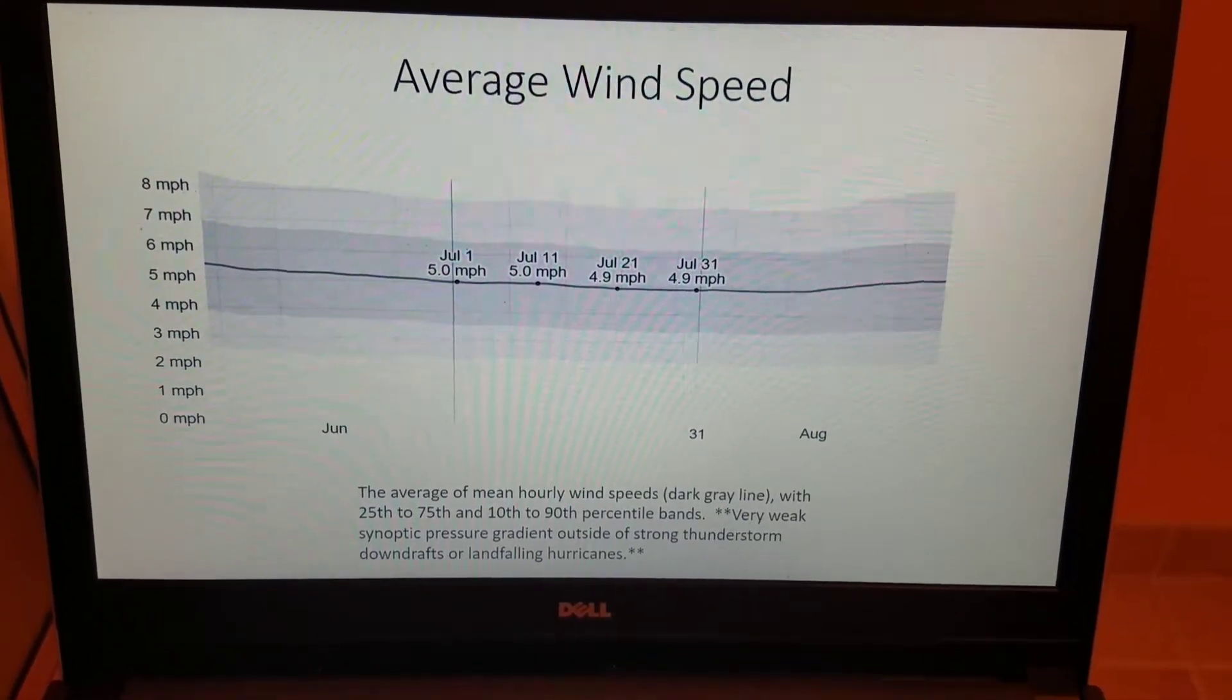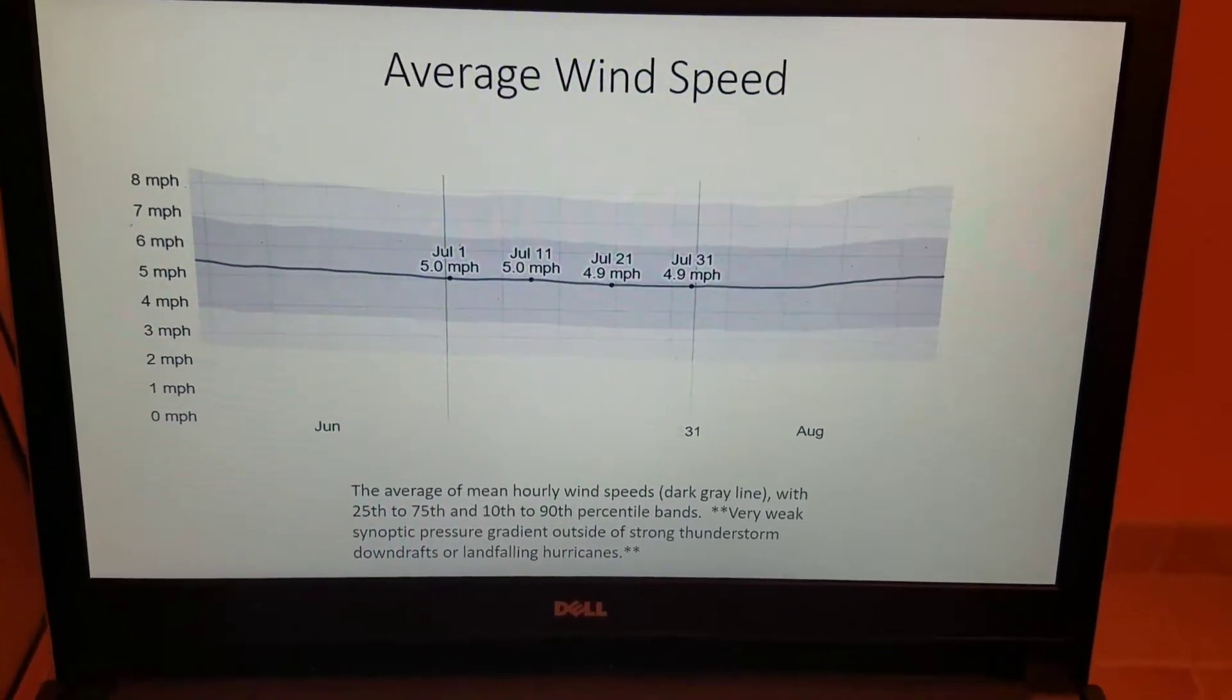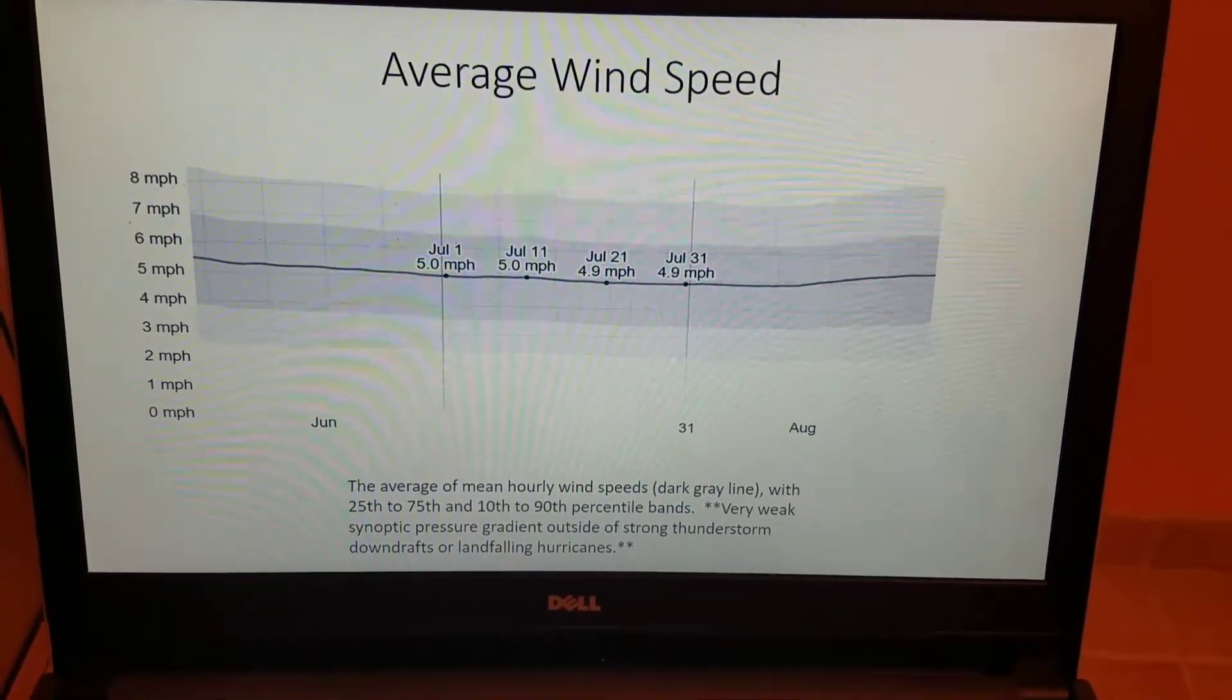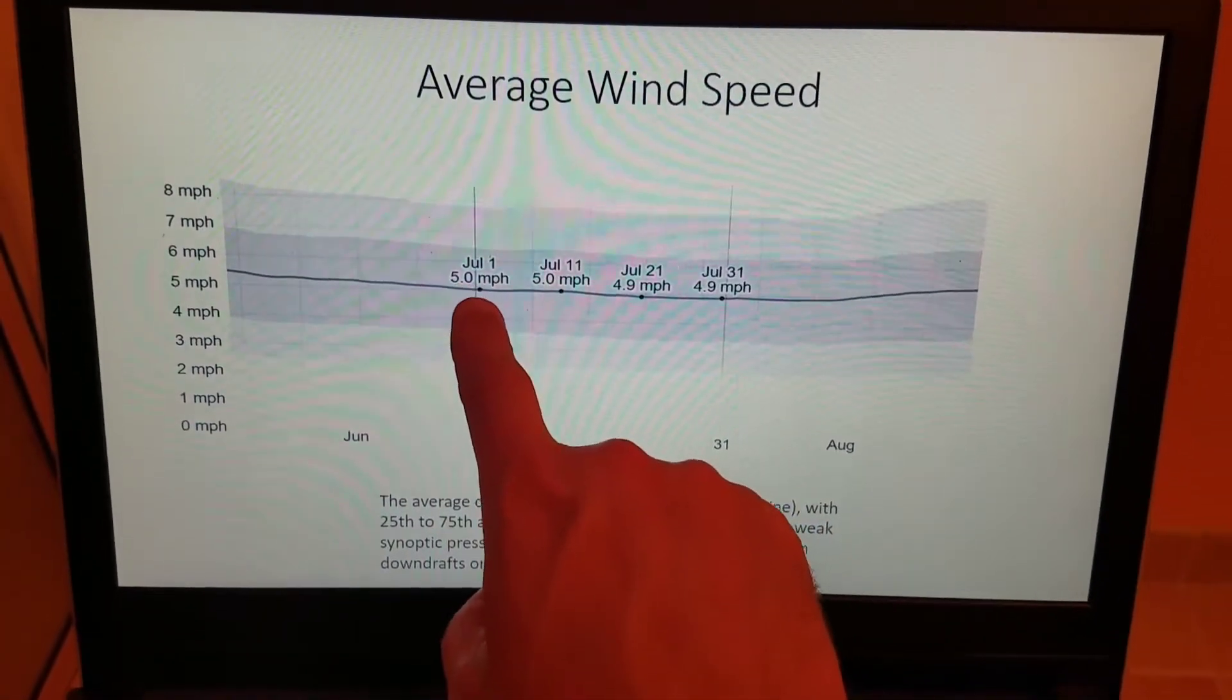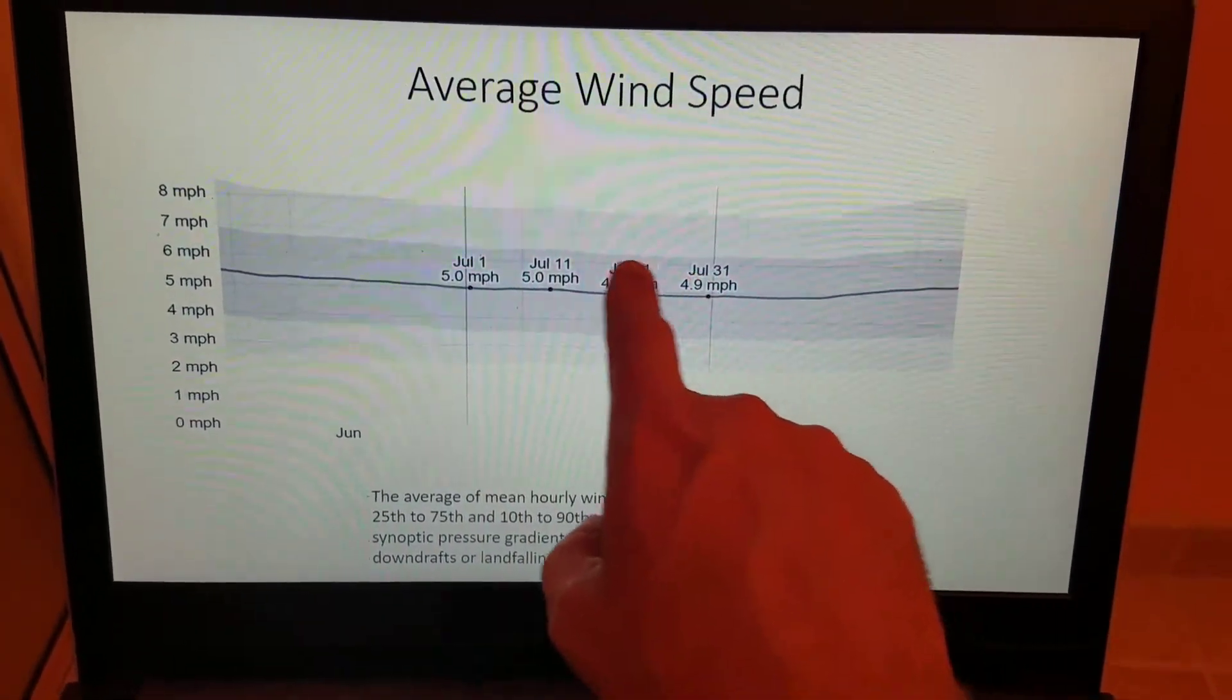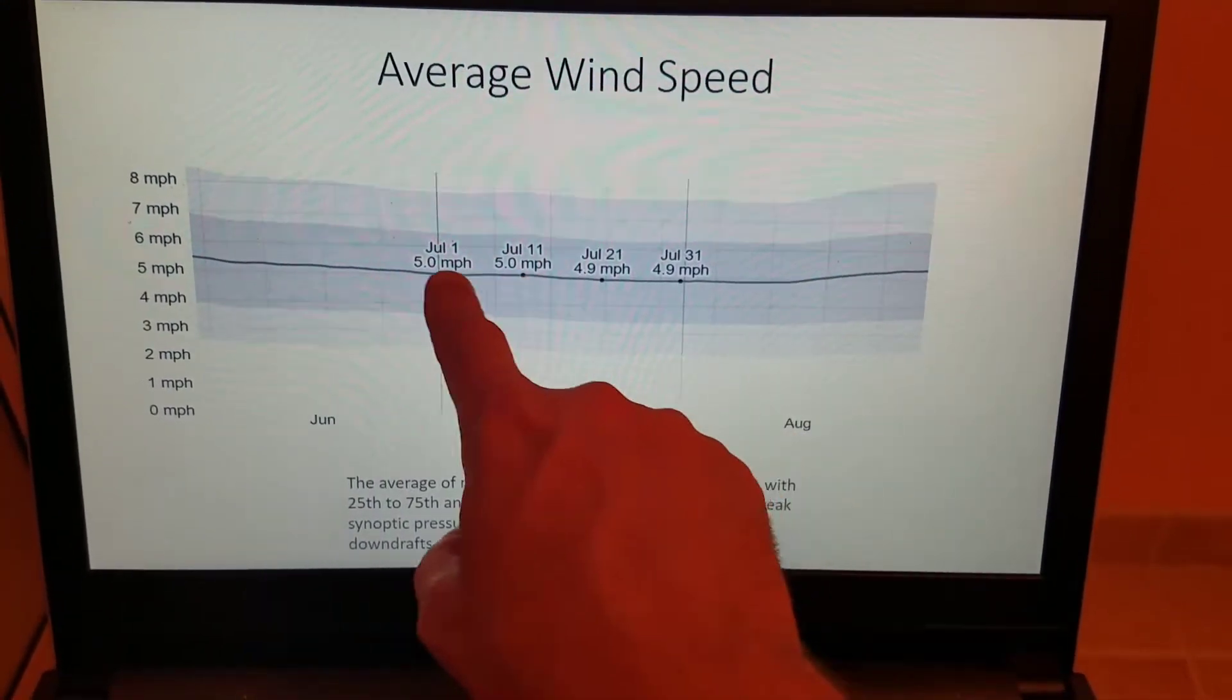The average wind speed, very weak synoptic pressure gradient continues in July. Outside of any strong thunderstorm downdrafts or landfalling hurricanes, the winds range from generally 4.9 to 5 miles per hour. Not much change over the month of July.